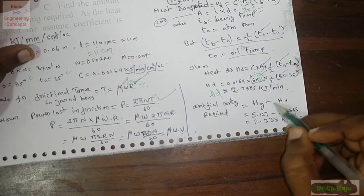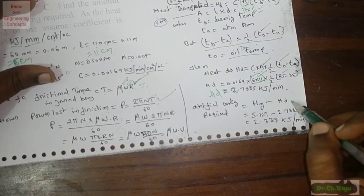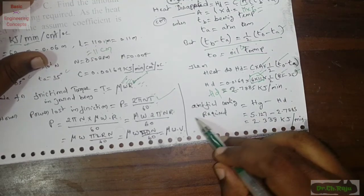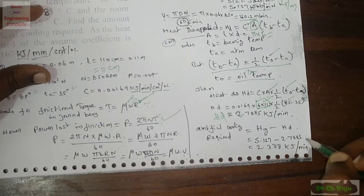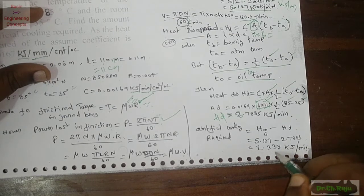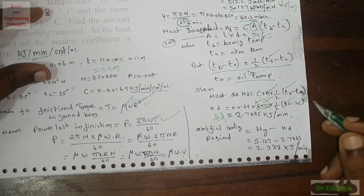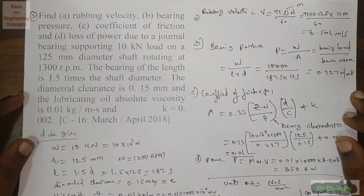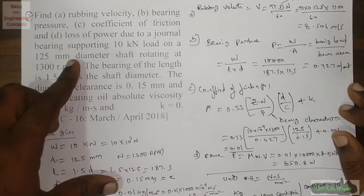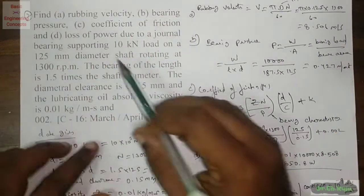Artificial cooling required equals heat generated minus heat dispatched. That is Hg − Hd = 5.127 − 2.787 = 2.338 kilo joules per minute must be removed by using artificial cooling.